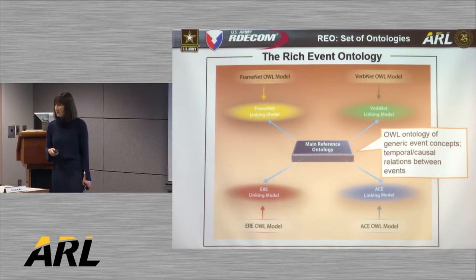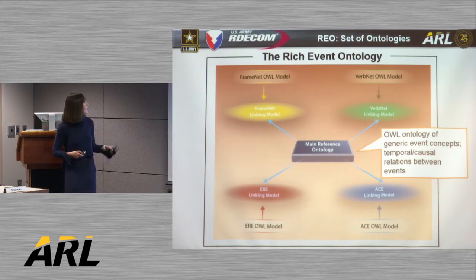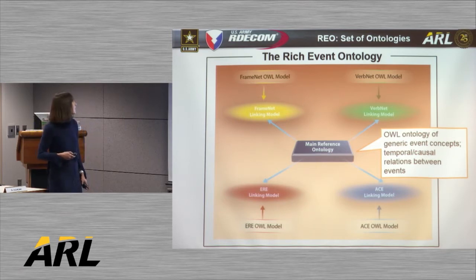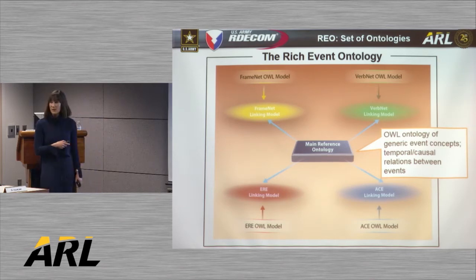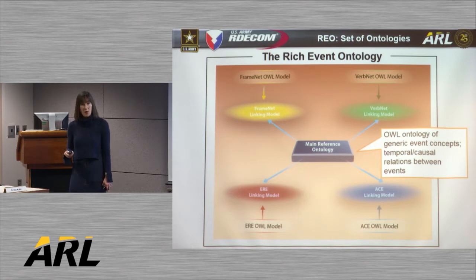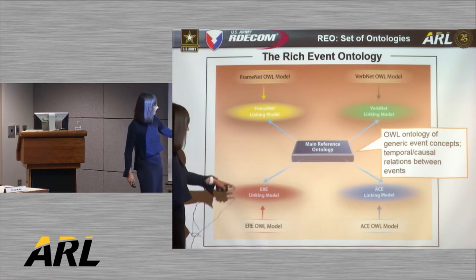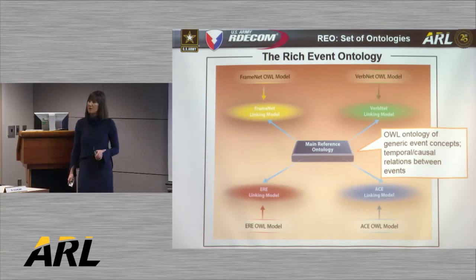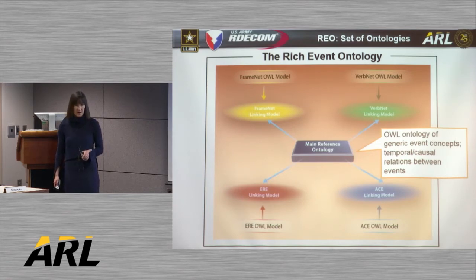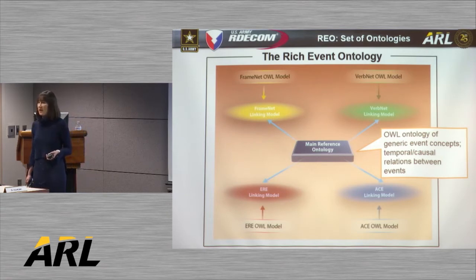What makes our event ontology unique is that we use existing SRL resources as the inventories of terms that denote the concepts in the ontology — specifically FrameNet, the Automatic Content Extraction or ACE project, and its direct spin-off the Entities, Relations, and Events or ERE project. Our first step was to implement each of these resources, previously in disparate XML formats, into OWL format. We then create a linking model for each, specifying the relationship between the generic event types in the main reference ontology and the event classifications made in each individual resource.